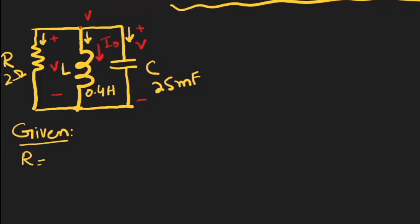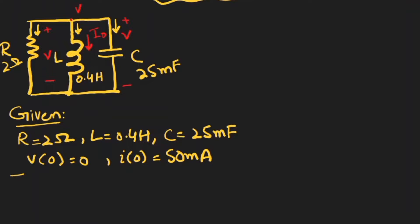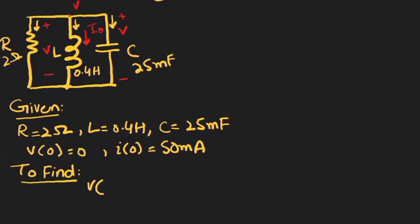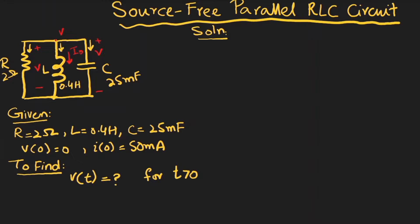The given parameters are: R equals 2 ohms, L equals 0.4 henries, and C equals 25 millifarads. The initial value of voltage is given as 0, and the initial value of current is given as 50 milliamperes. We have to find v(t), the value of voltage for t greater than zero.